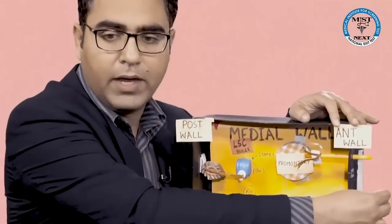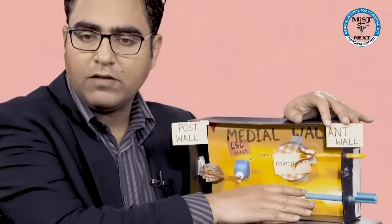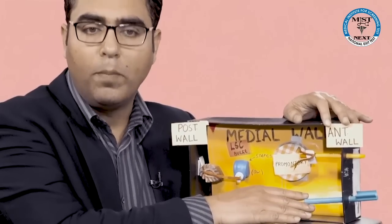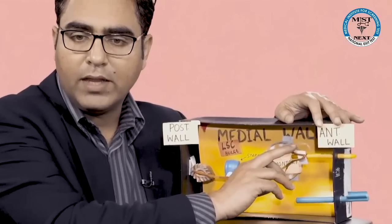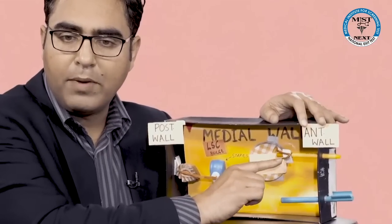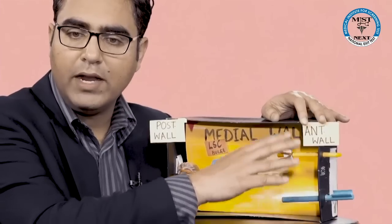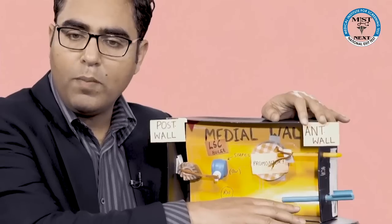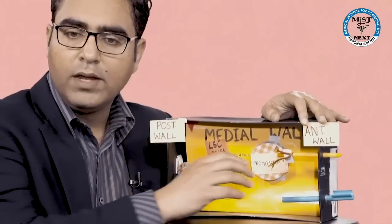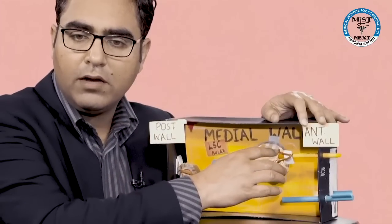Now please see the blue marker — this represents the Eustachian tube opening. The upper one, this orange one with fibers attached to it, represents the canal for tensor tympani muscle. So on the anterior wall of the middle ear, the blue marker represents the opening of the Eustachian tube and the orange marker represents the canal for tensor tympani. These fibers indicate the tensor tympani muscle fibers which attach to the malleus.